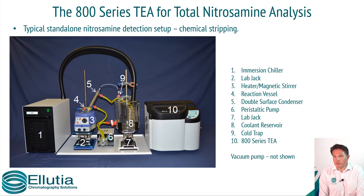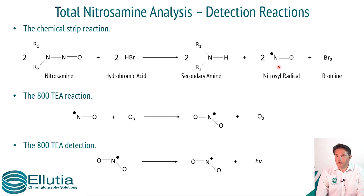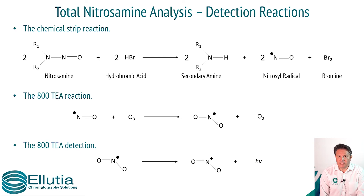This is a photograph of the glassware system that we supply. Similar to before, we use a chemical reaction. In this case, the hydrobromic acid is producing the secondary amine, releasing the nitrosyl radical and bromine. The nitrosyl radical enters the TEA, reacts with ozone to form the excited nitrogen dioxide molecule, which relaxes to release a photon of light, which is then detected.